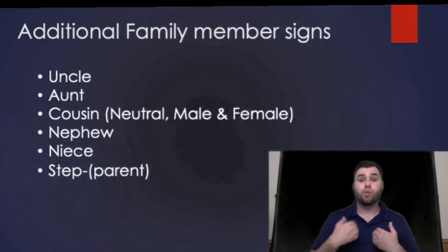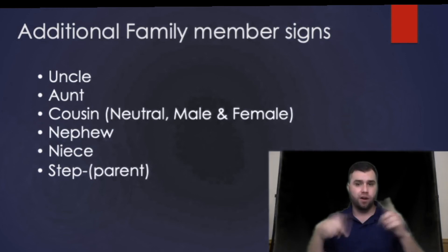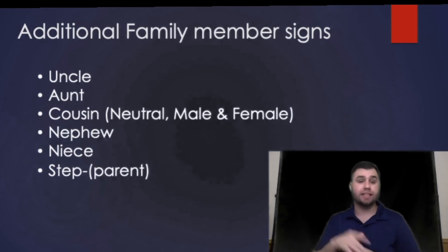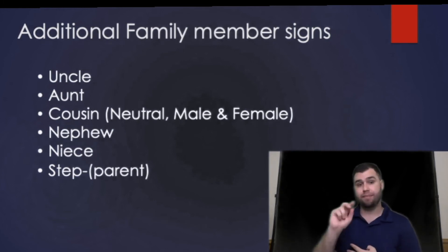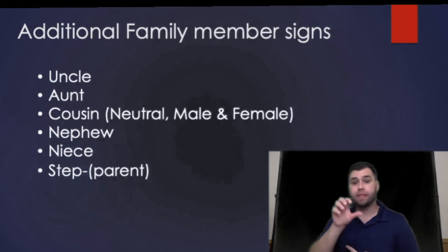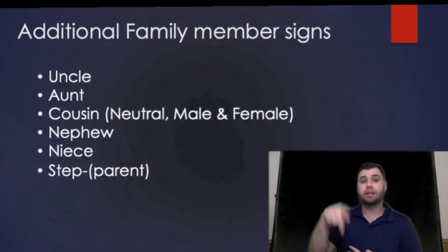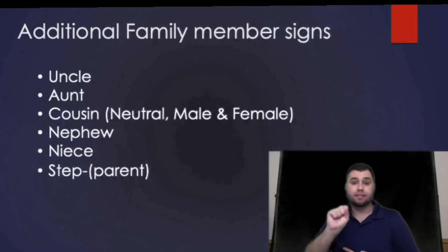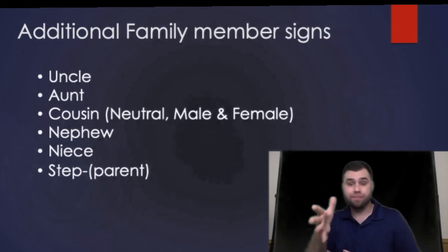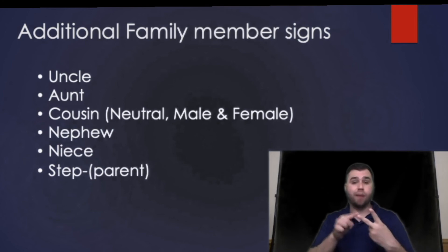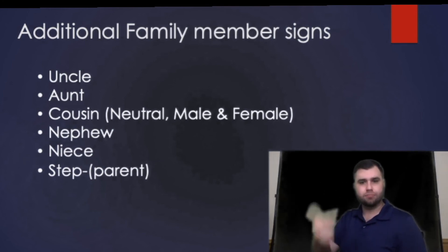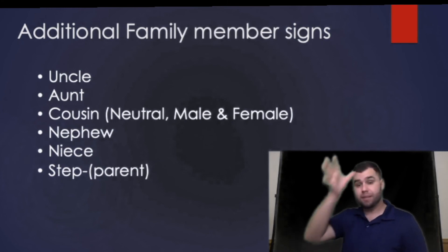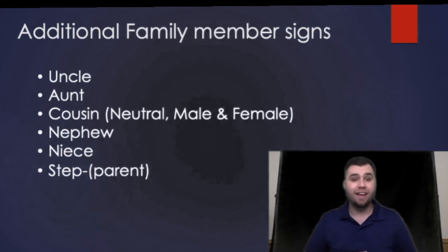Now for step-parent signs — there are many different ways and variations. I'm going to show you two options. The first way is to fingerspell S-T-E-P, then sign mom; or fingerspell S-T-E-P, then sign dad; or fingerspell S-T-E-P, then sign grandma. The second option uses a motion — you make an F handshape — so step mom, step dad. You can choose whichever variation you prefer.